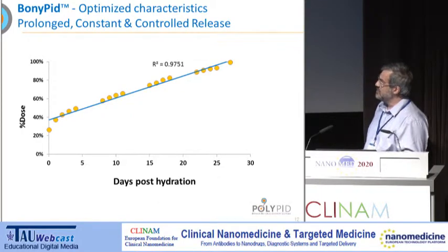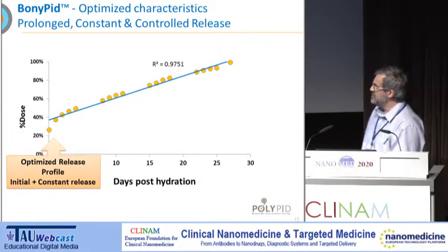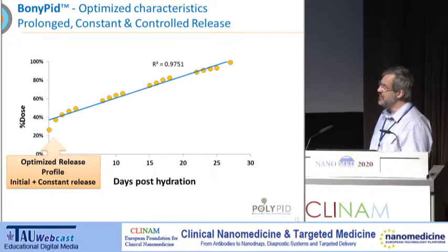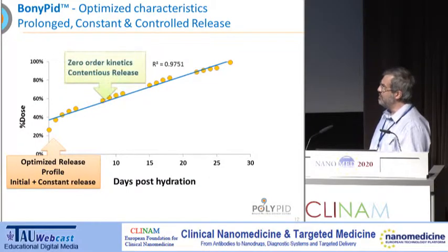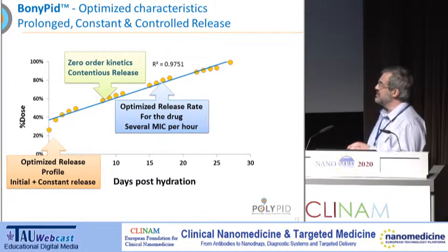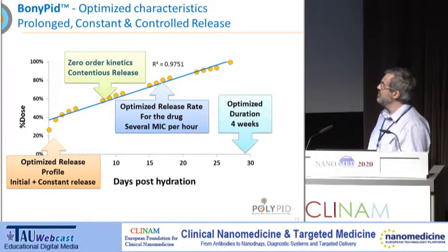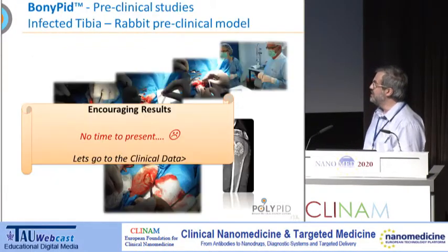This is the release profile of Bonipid, reflecting Polipid technology. We optimize every aspect of the profile. We select the best drug and optimize the release profile to zero-order kinetics. You can select the best release rate to achieve several micrograms concentration per hour during 30 days — 4 weeks. So you can select duration, release rate, optimize the profile, and achieve zero-order kinetics. That's the idea of Bonipid.